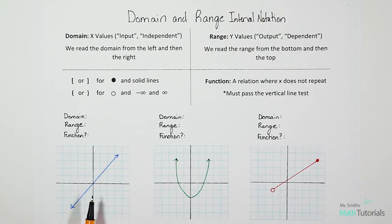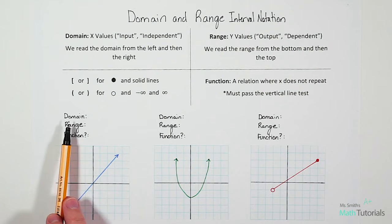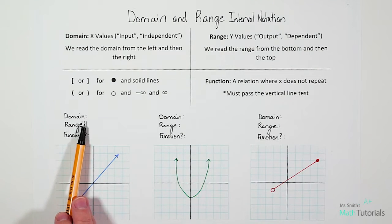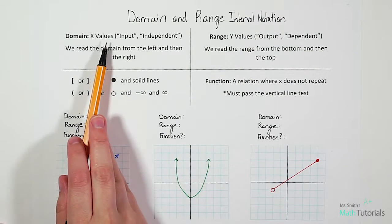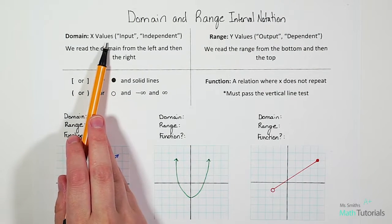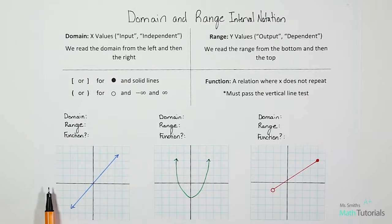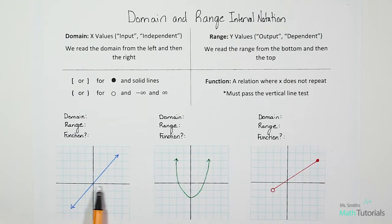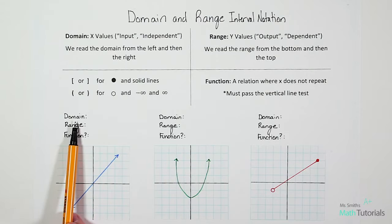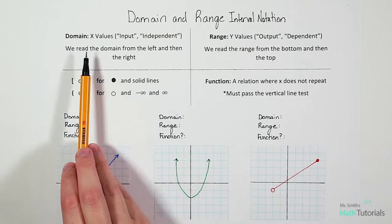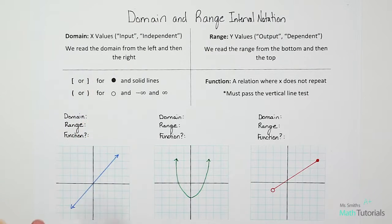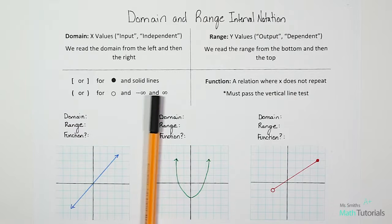When we look at this first example, the first thing they're going to ask us for is the domain. Remember, domain is our x values, so when we look at domain, we're looking at the x-axis values. We do not care about the y-axis at all when we're doing domain. We also read domain from left to right.